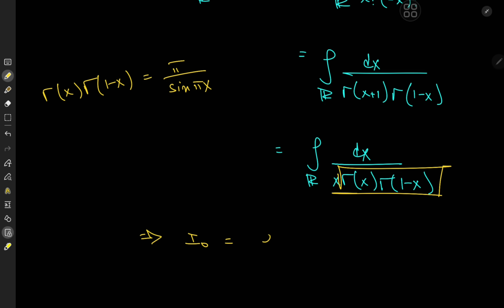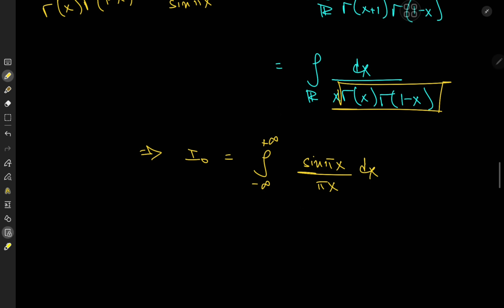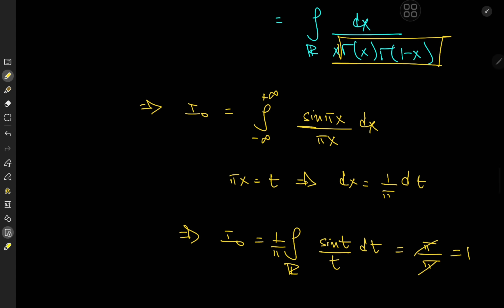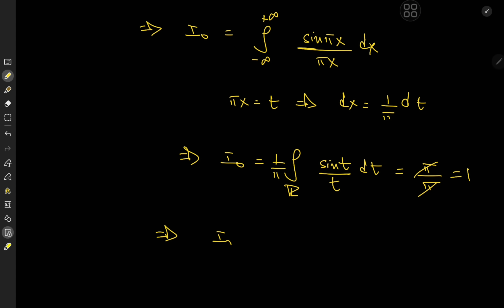In other words, our target integral I_0 is the integral from negative to positive infinity of sin(πx)/(πx) dx, which we immediately recognize as the Dirichlet integral. Letting t = πx, so dx = dt/π, we get I_0 = (1/π)·∫sin(t)/t dt over the real line. The Dirichlet integral equals π, so π/π = 1. Therefore I_0 = 1, which implies I_n = 2^n.